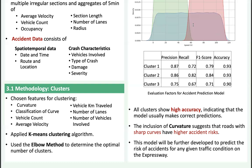For future development, we plan to develop this model further to predict the risk of accidents for any given traffic condition on the expressway. This proactive approach can help identify high-risk areas and implement pre-emptive measures, ultimately enhancing road safety. In conclusion, our research demonstrates the potential of using clustering and machine learning techniques to predict accident risk on the expressway. By transitioning from a reactive to a proactive approach, we can significantly improve traffic management and road safety. Thank you for your attention.